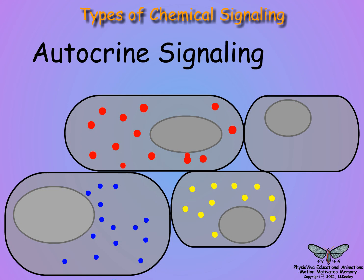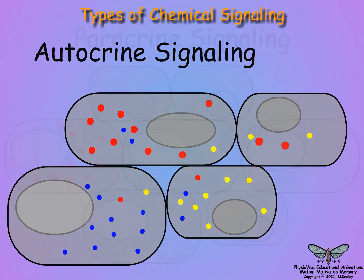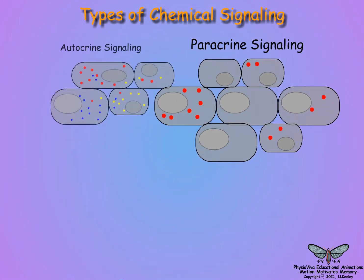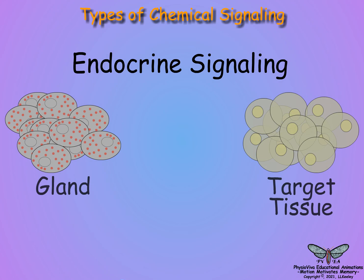Autocrine signaling is by chemicals that affect their source cell or directly adjacent cells. Paracrine signaling is the diffusion of a signaling chemical from one cell to nearby non-adjacent cells. Endocrine signaling is by chemicals called hormones synthesized by specific glandular cells.